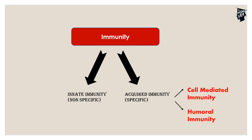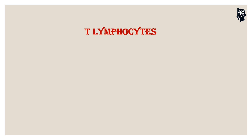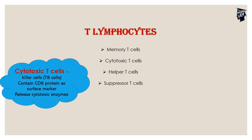Humoral immunity is mediated through antibodies. T-lymphocytes are mainly of four types: memory T-cells, cytotoxic T-cells, helper T-cells, and suppressor T-cells.